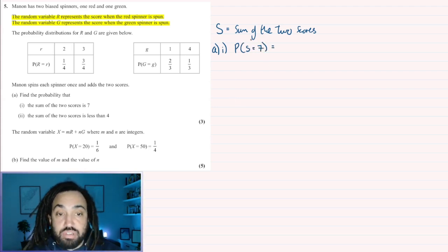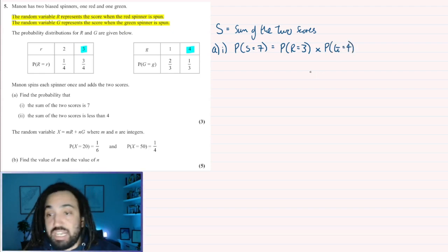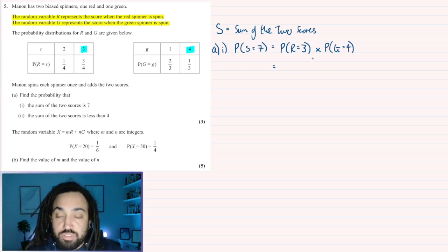How are we going to get 7 by spinning these two spinners once each? We're going to need the red to be 3 and the green to be 4. That's the only way we're going to add them up to get 7. So we need the probability of R equals 3 multiplied by the probability of G equals 4. The red being 3 is three quarters and the green being 4 is one third. So multiply those two together, we get one quarter as our answer.